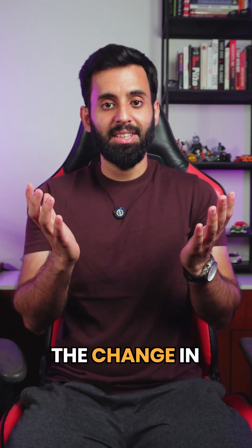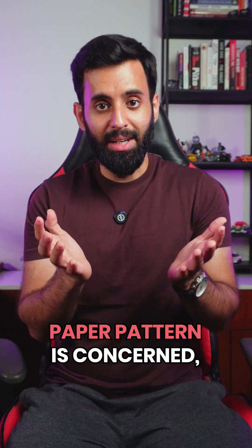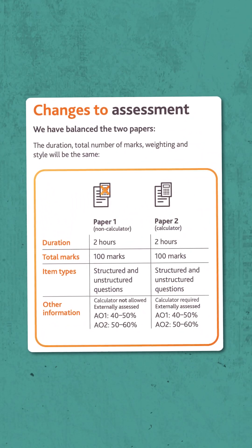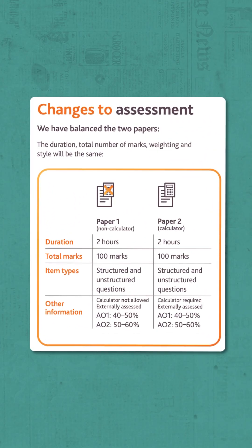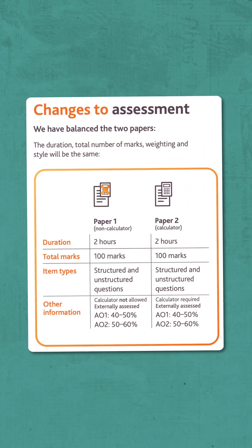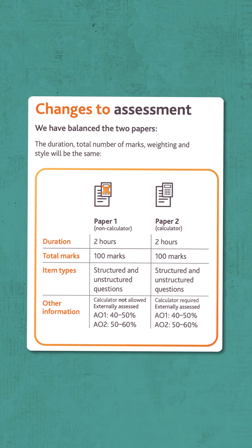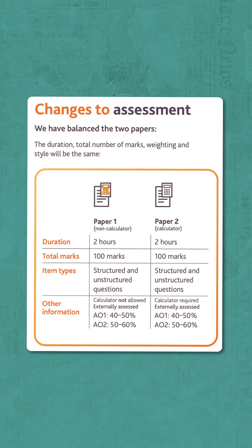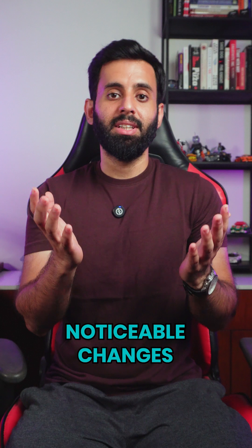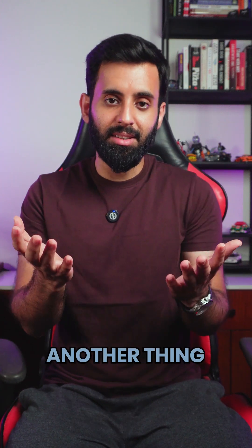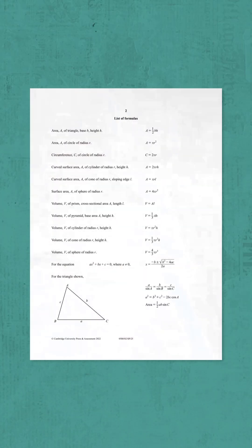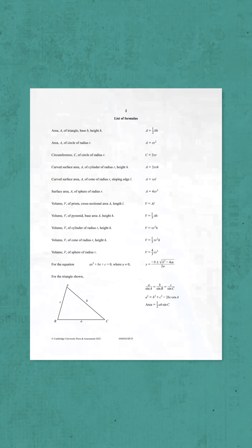As far as the change in paper pattern is concerned, now both papers are of 100 marks each, both carry 50 percent weightage, and the duration is now two hours each. Another thing to mention is that you will now get a detailed formula sheet in both paper one and paper two.